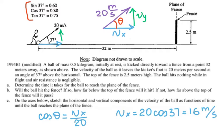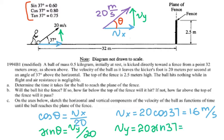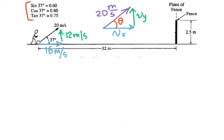For the vertical component, sine of theta equals Vy over 20, so Vy equals 20 sine of 37 degrees. Sine of 37 is 0.6, and 0.6 times 20 gives me 12 meters per second. So the vertical velocity is 12 meters per second and the horizontal velocity is 16 meters per second. The distance to the fence is 32 meters.